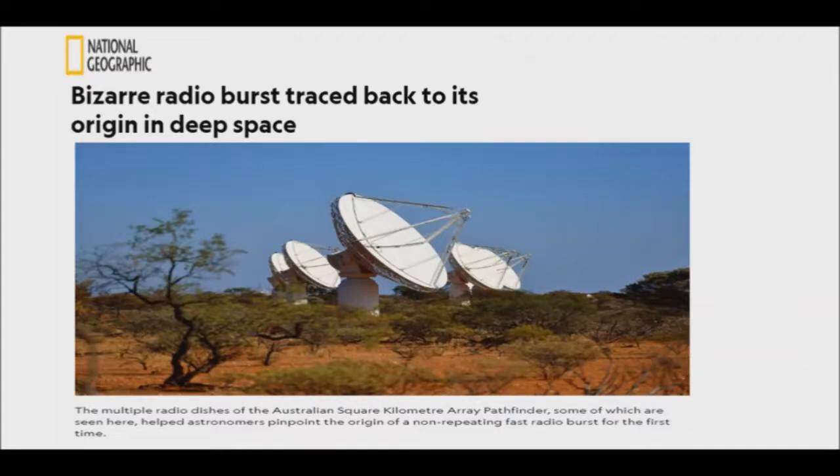Fast radio bursts, FRBs or furbies, are brief radio emissions from distant astronomical sources. Some are known to repeat, but most are single bursts occurring only as a single flash of detectable energy. In 2017, astronomers pinpointed the location of the repeating FRB 121102 and reported that it is a star-forming region of a dwarf galaxy more than 3 billion light years from Earth.